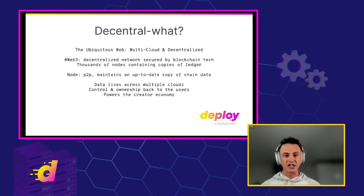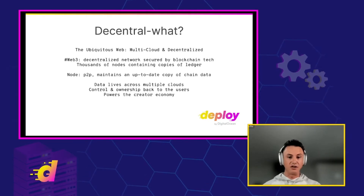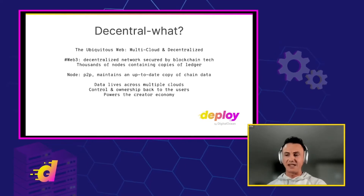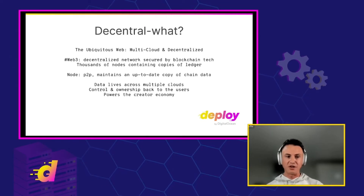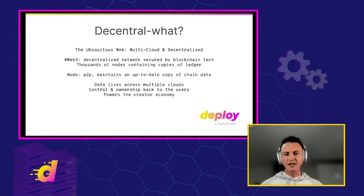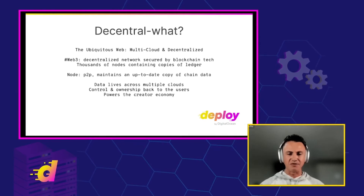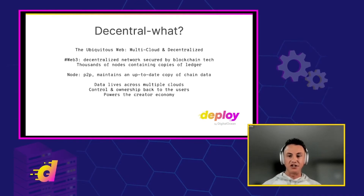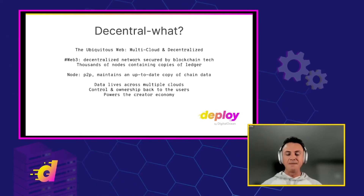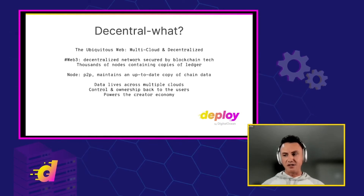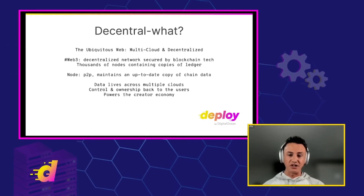Web3 is a decentralized network secured by blockchain technology, and it consists of thousands of different nodes containing copies of the ledger. Some blockchains have all the same data, while others are working on sharded data — a little piece here, a little piece there. A node is a piece of P2P software that maintains an up-to-date copy of the chain data, this ledger data. This data lives across multiple clouds and multiple computers, which allows content owners to bring control and ownership back to users and powers the creator economy.